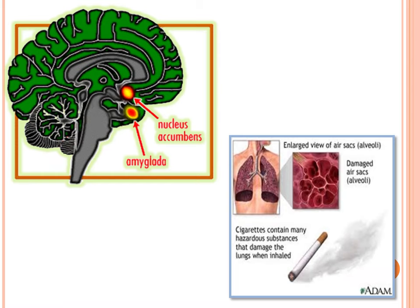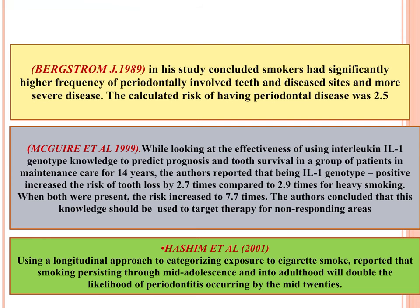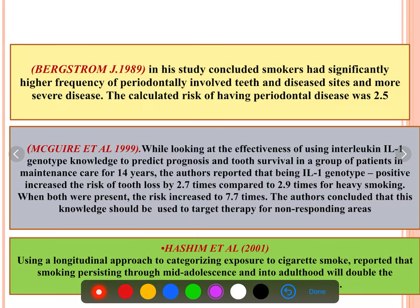Then discuss how tobacco is acting, especially at the nucleus accumbens — that is the main site of action. Key landmark studies include Ladson 1961, Sayers 1999, and Catenew in 2000. These are the most important landmark studies that everyone would be expecting in a viva or seminar.